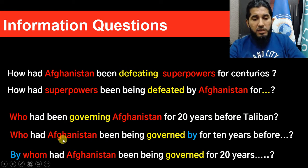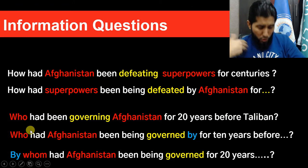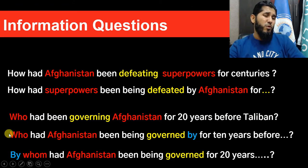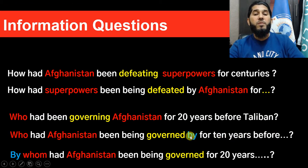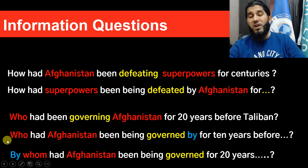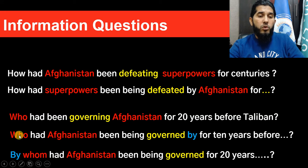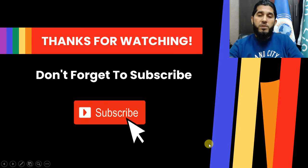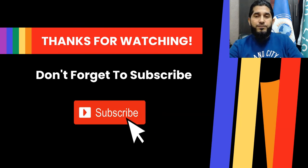There are two ways to form the passive. The informal way, used in normal daily spoken or informal written English, places the preposition at the end: 'Who had Afghanistan been being governed by for 20 years before the Taliban?' The formal way, for formal writing or formal environments, brings the preposition to the beginning and changes 'who' to 'whom': 'By whom had Afghanistan been being governed for 20 years before the Taliban?'